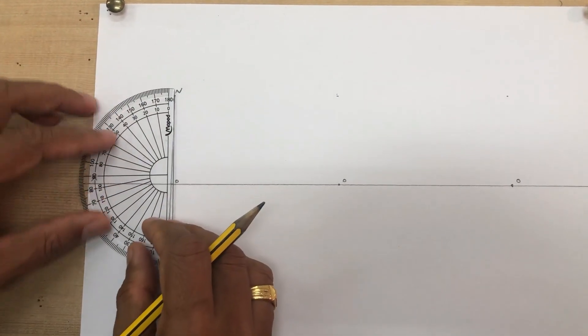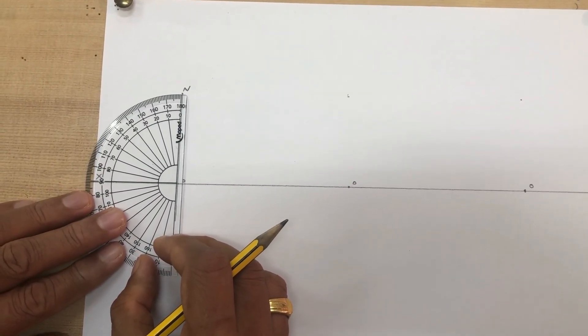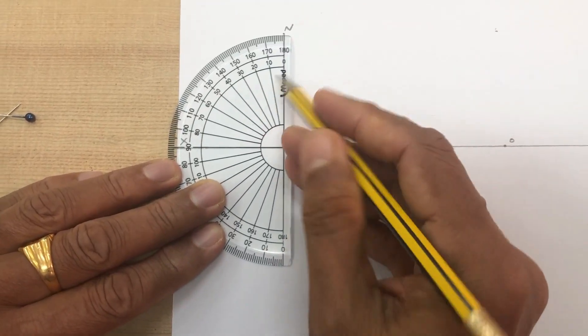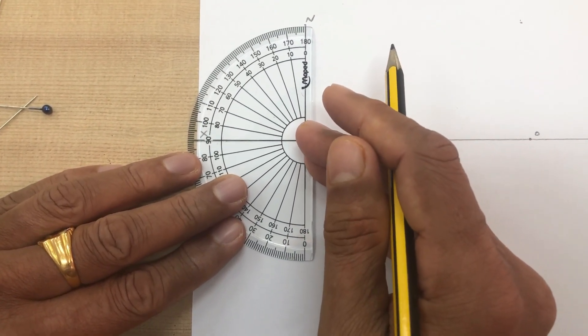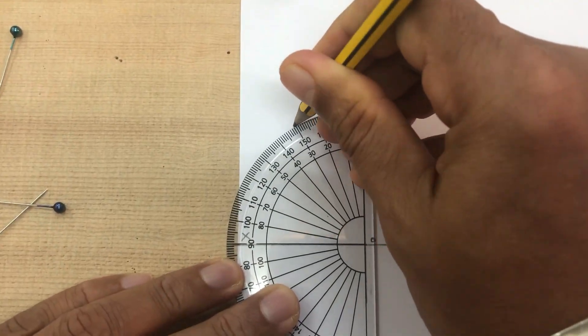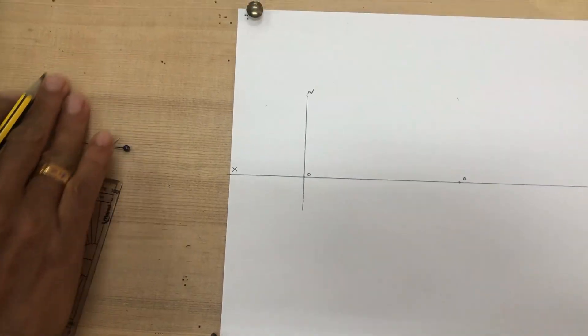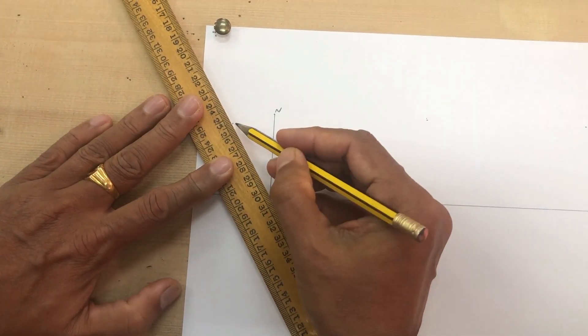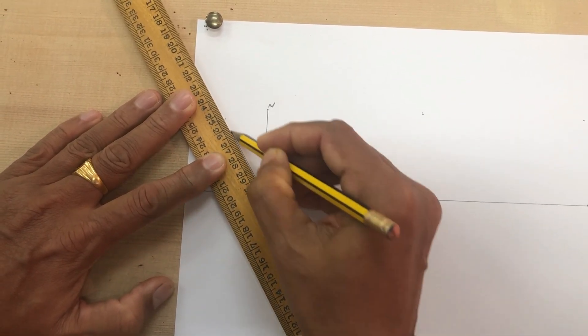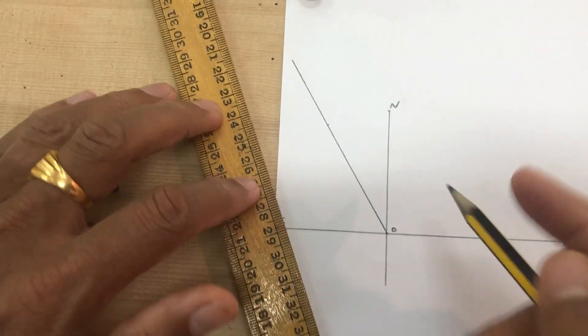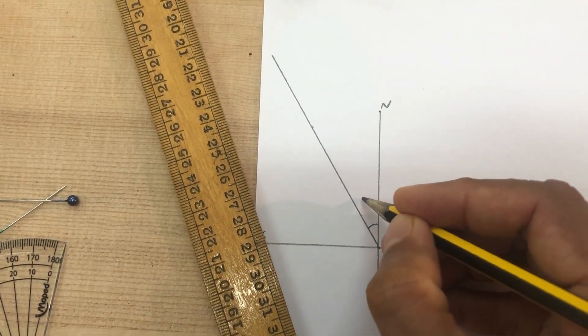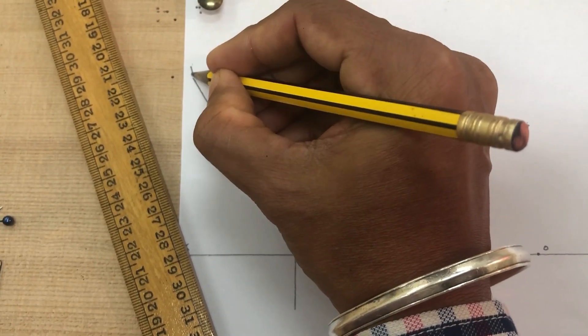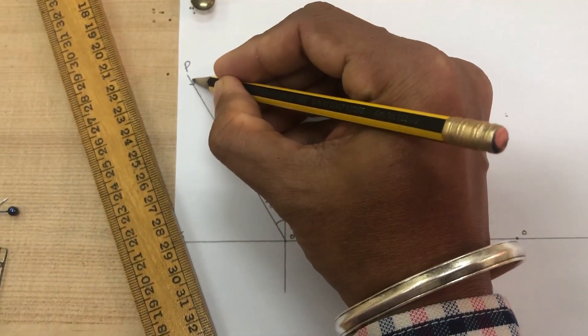Keep the protractor again at point O such that the baseline of the protractor will coincide along the normal. Choose an angle of 30 degree and mark here. Angle i is equal to 30 degree. Let this ray be named as PO. PO is the incident ray.